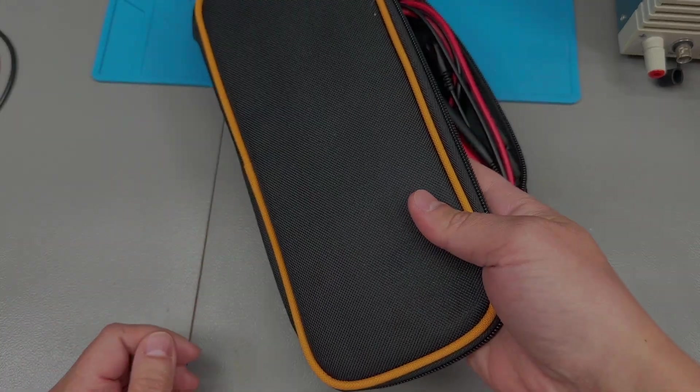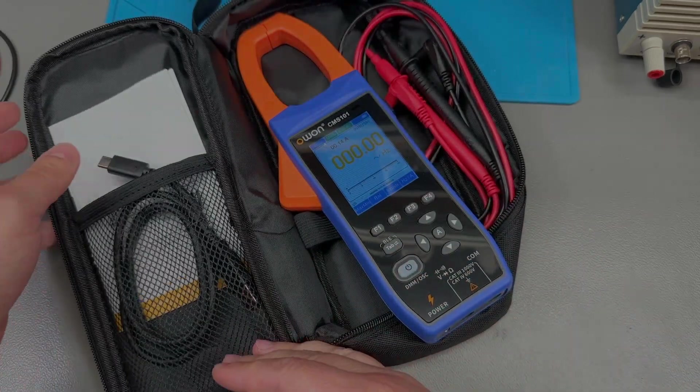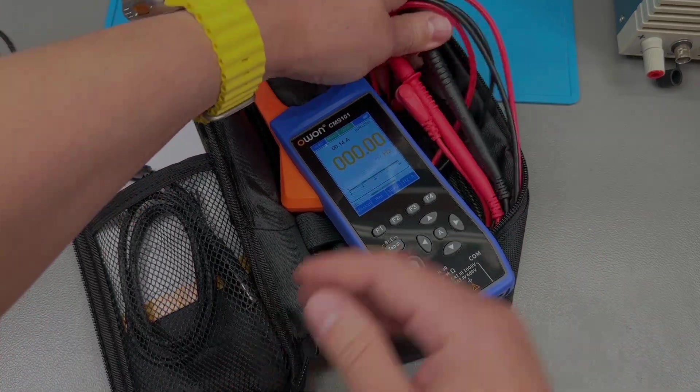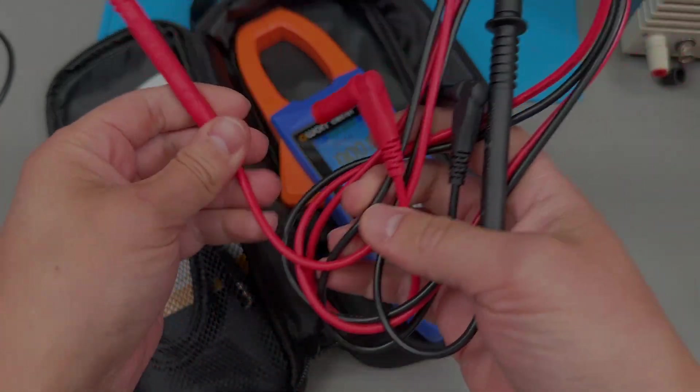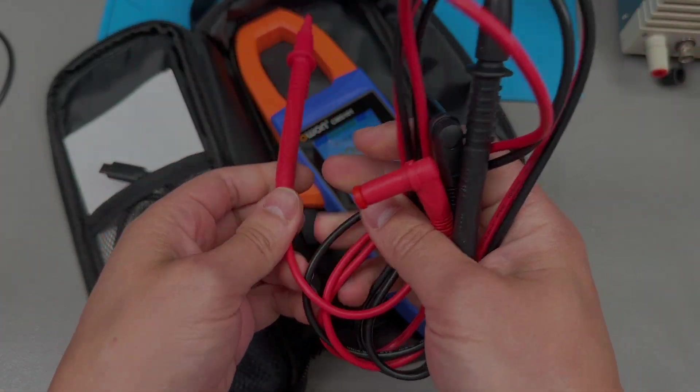The unit comes in this soft carry bag and will include a set of test leads which have PVC insulated wire, but it's good quality soft one.